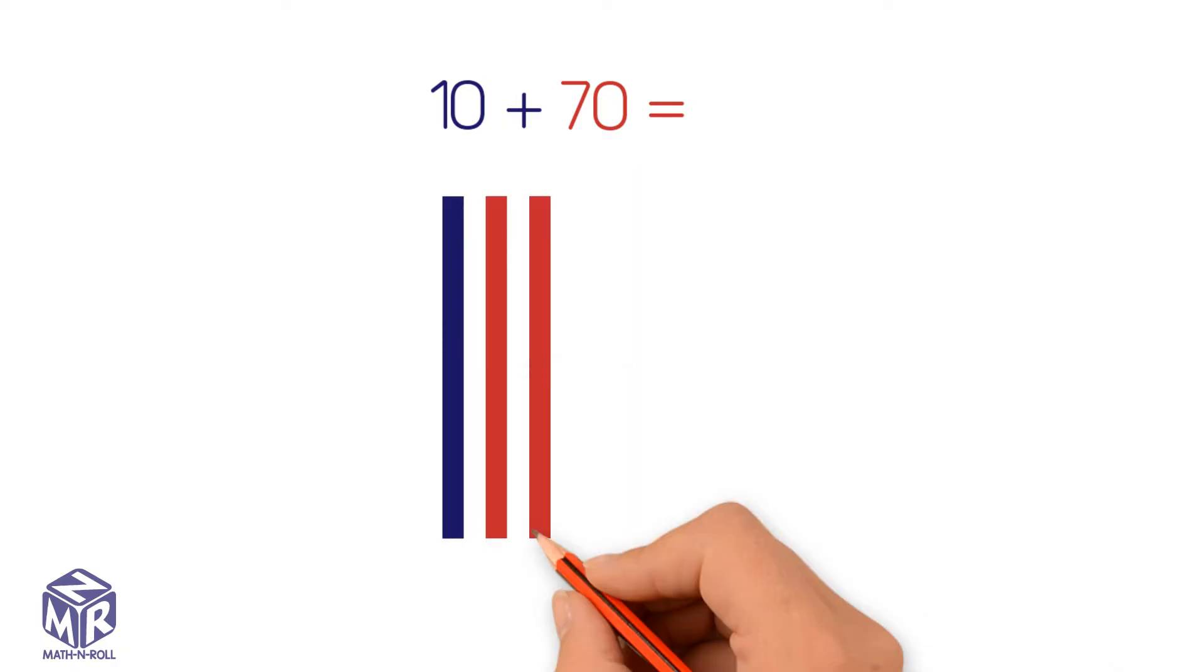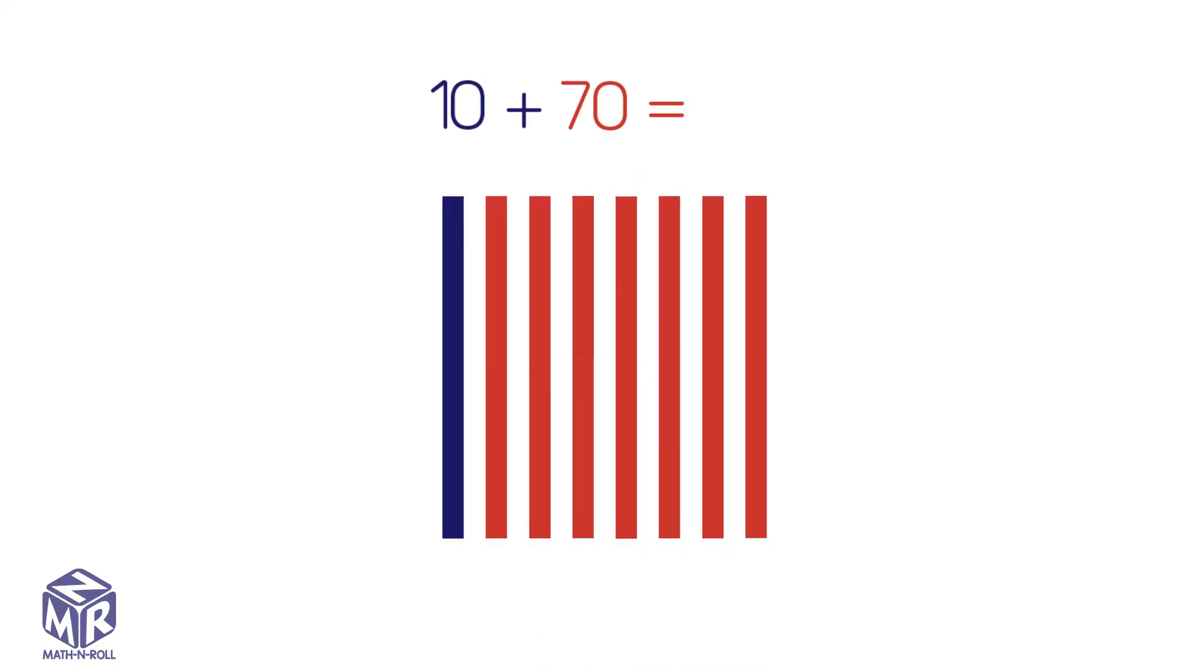Let's try another example. 10 plus 70. 10 has one 10 and 70 has seven tens. Let's draw it out. We add them together and we get eight tens or 80.